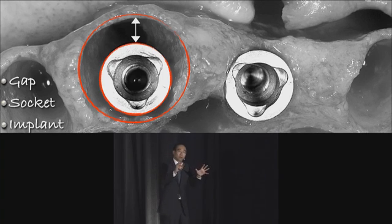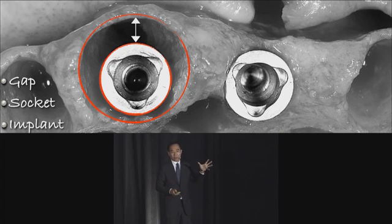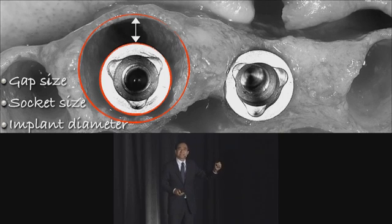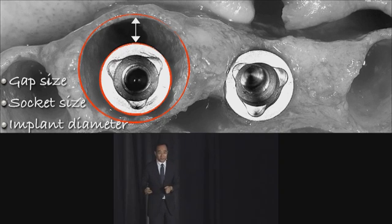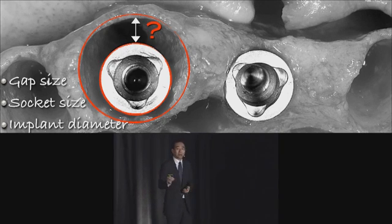In a perfect world, everything is going to stay the same way. But once we start adding biology — the soft tissue and the bony tissue — suddenly things get a lot more complicated. Therefore, we want to further the thinking process and look at three things: what is the size of the gap, what is the socket size, and how do the implant dimensions affect the dynamics of this whole biology?